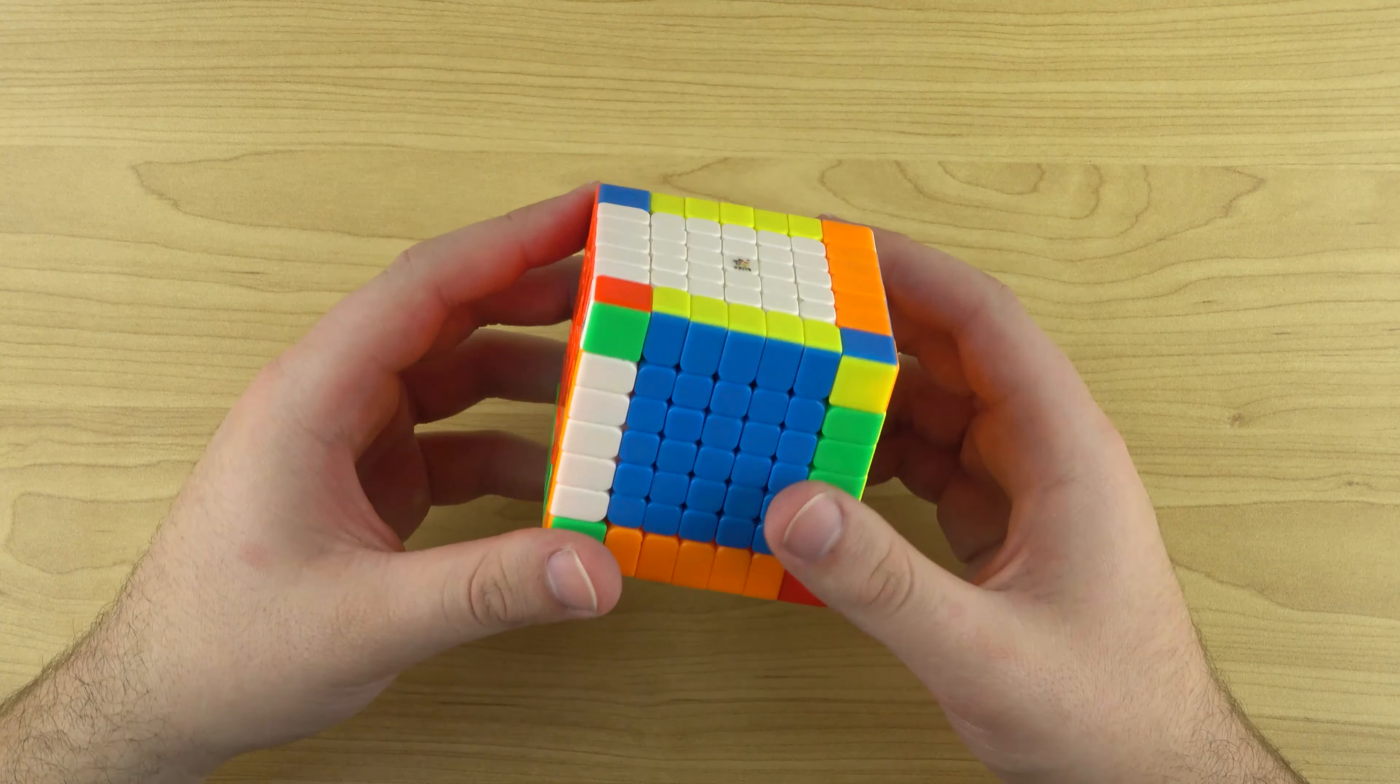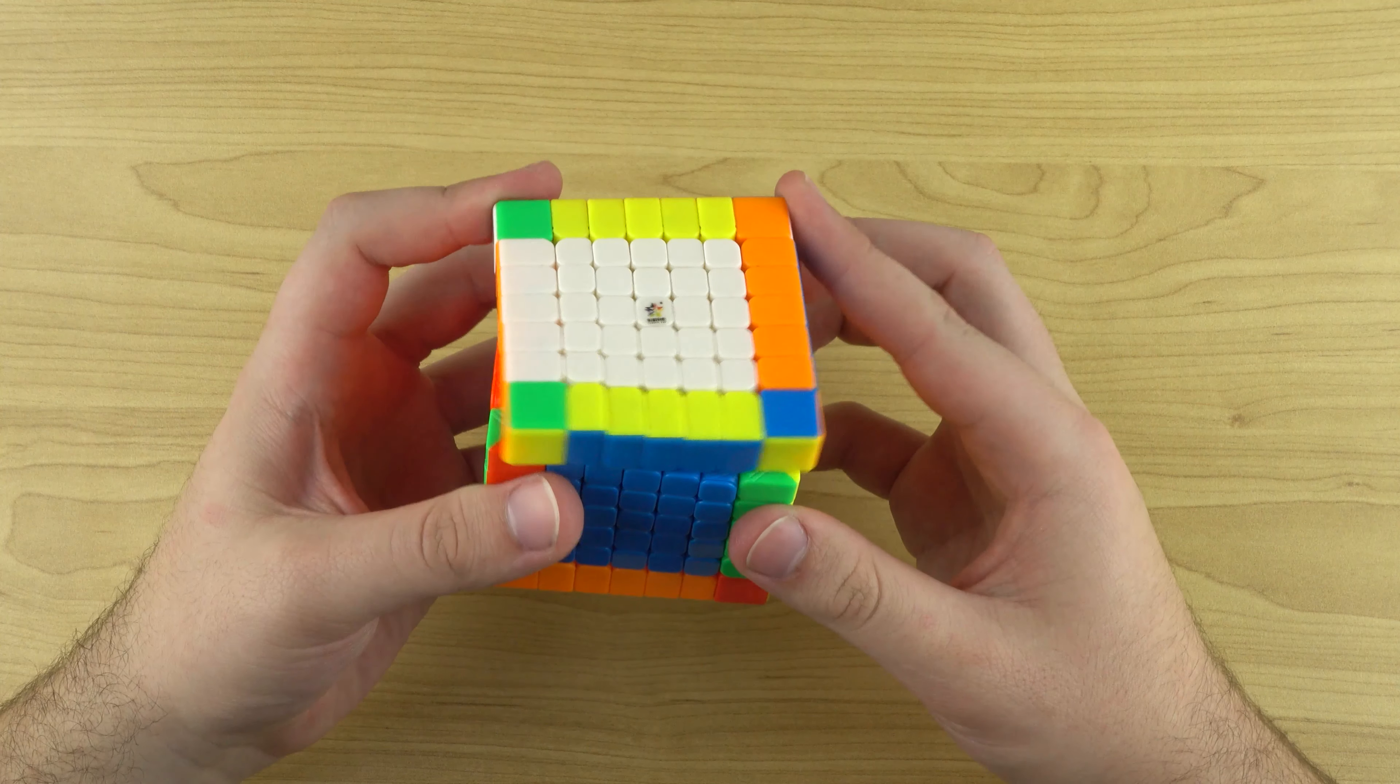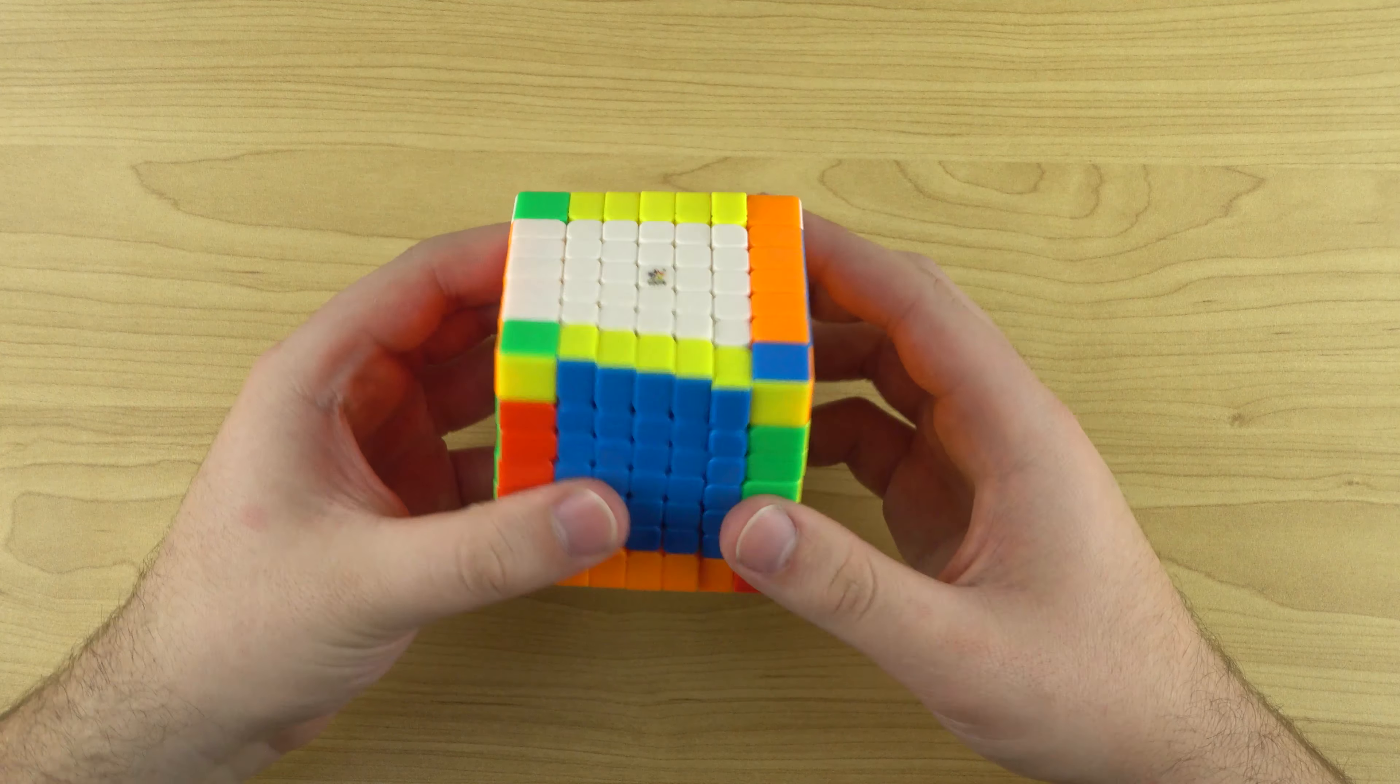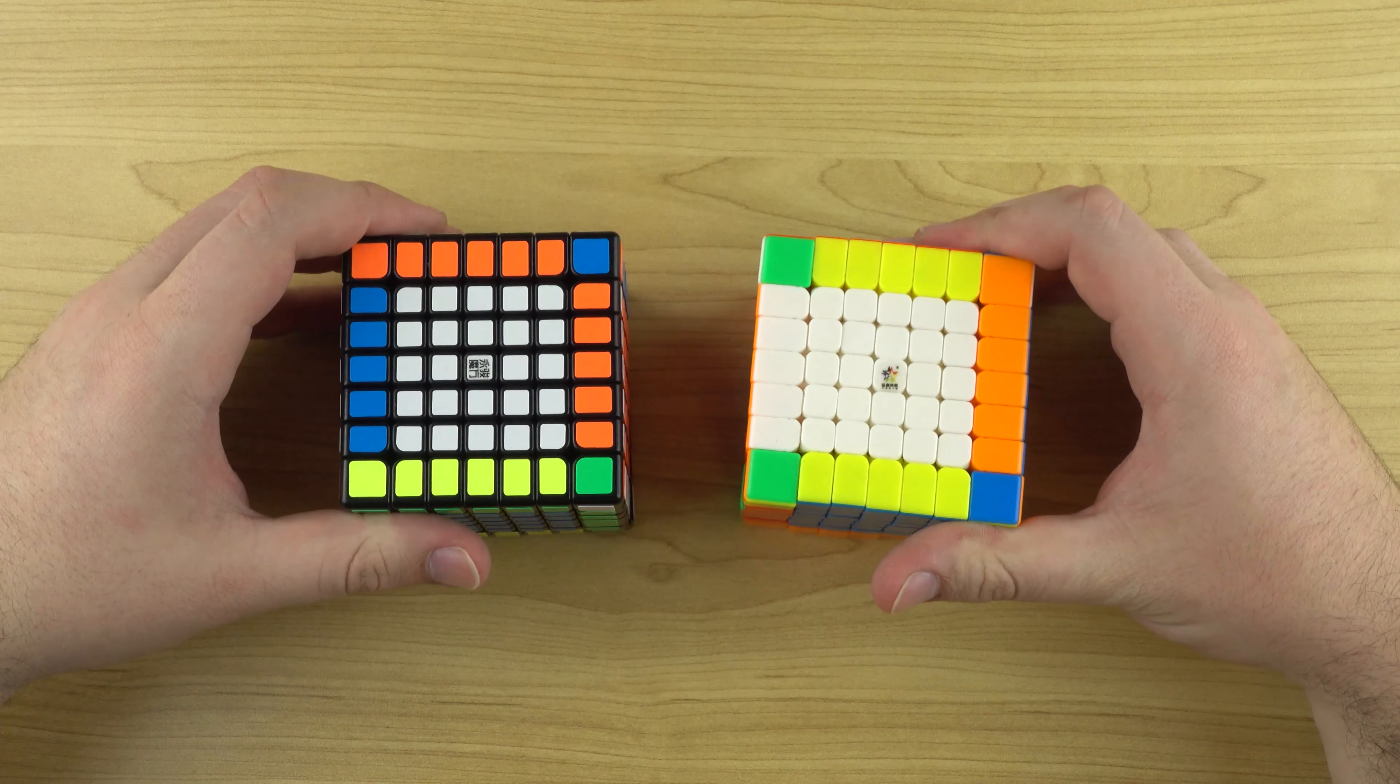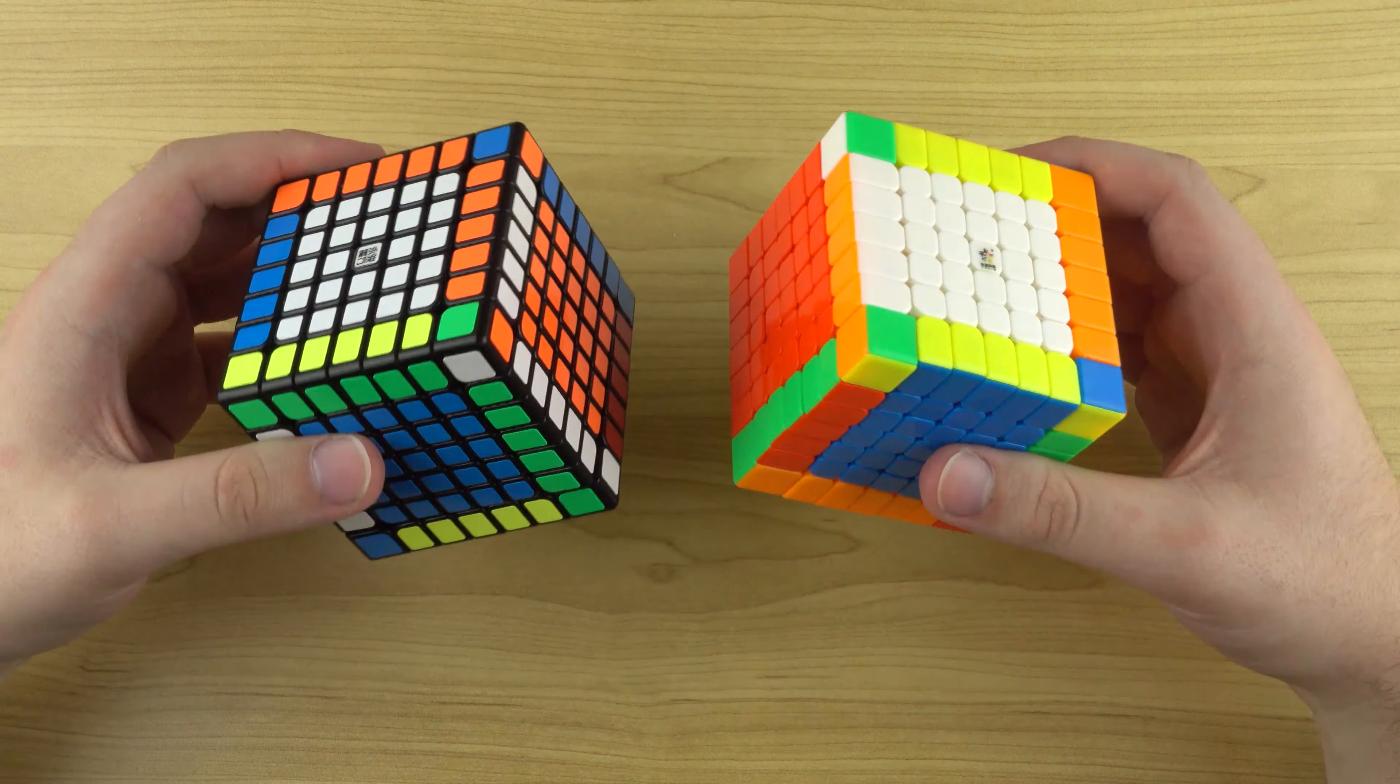I mean, half the price of any other of the magnetic 7x7s right now, other than the Yufu. So definitely worth considering. Let's take a look at corner cutting. Yeah, so not quite as much. Pretty similar. I'm having to be a little bit more forceful though. But for the amount of money you're paying for either of these puzzles, there's only so much room to complain. I mean, you have to understand the manufacturer's perspective. Yeah, they can make a great product, but they have to make a living too. They have employees to pay. So they can only make so good of a puzzle for a price.